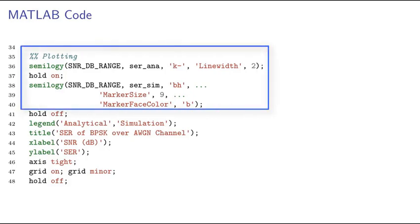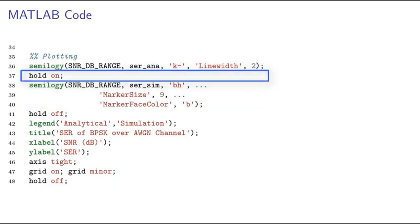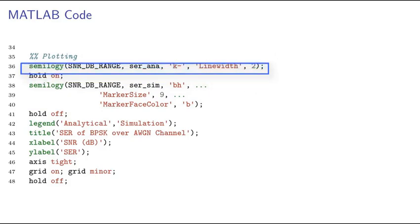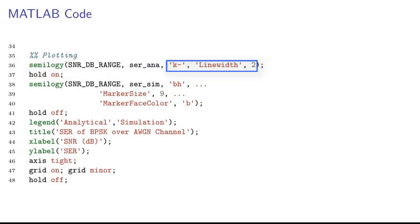We now plot these values using the MATLAB command semilogY. Please note that the hold command is used when we want to plot multiple plots in the same figure. First, we plot the analytical symbol error rate using this command. This part of the command is for line specifications. Here, 'k' is used for solid black line. Lastly, we set the line width as 2. The hold on command is used to enable plotting of another plot in the same figure.